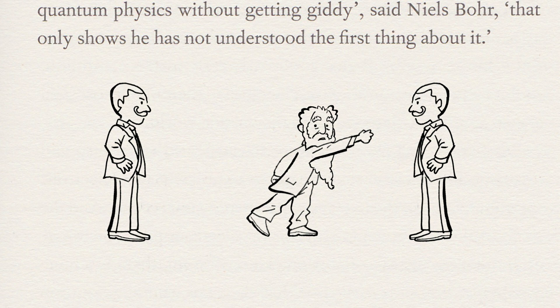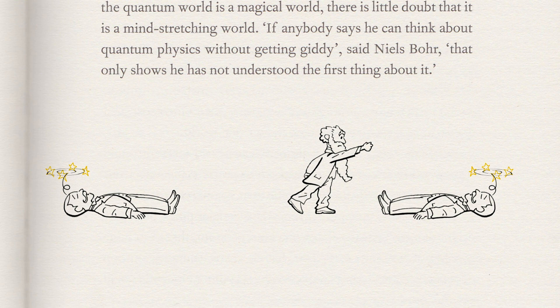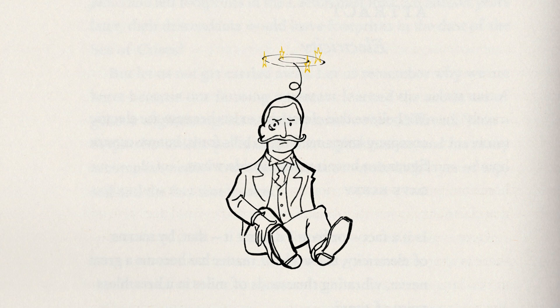For instance, a single atom can be in two places at once, or two atoms can influence each other instantaneously even if on opposite sides of the universe.